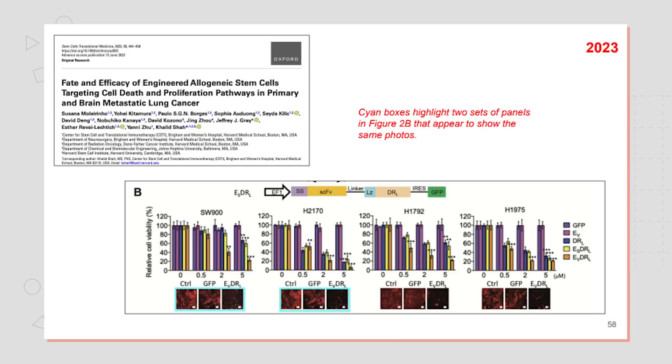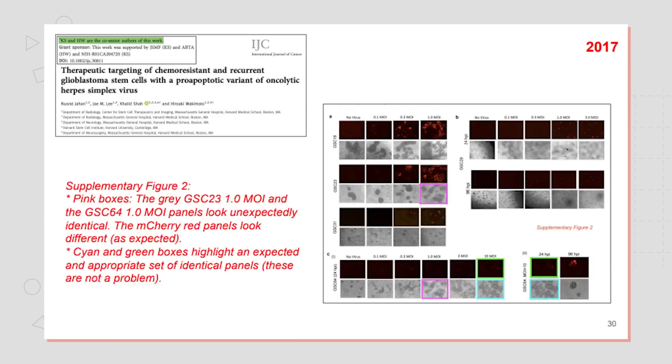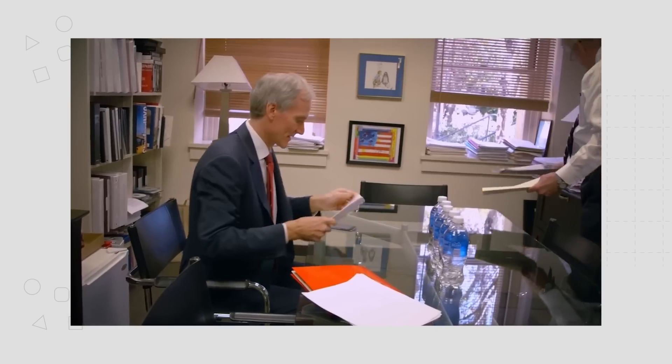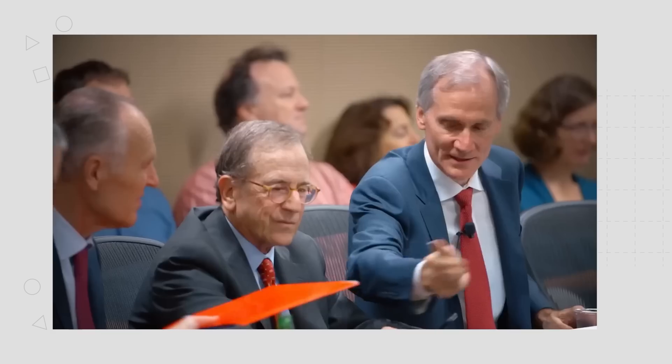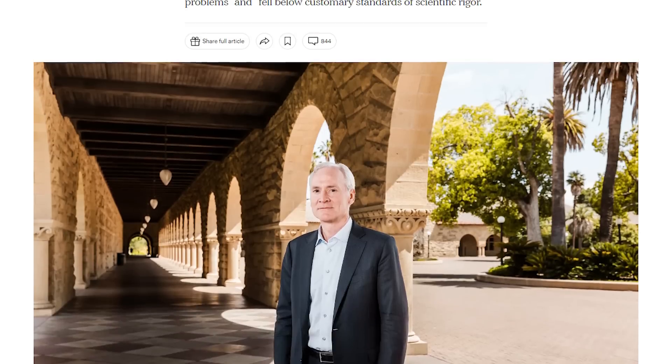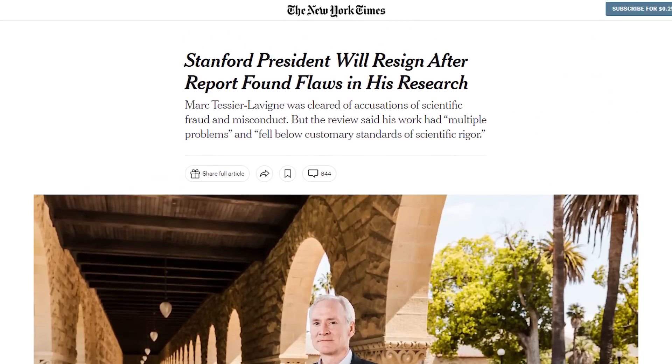Not all heroes wear capes, and in today's video I'm talking to someone who I regard as a hero for science. Her name is Elizabeth Bick and she is best known for finding evidence of image fraud in academic papers. She was the one who found evidence of image fraud in Mark Tessier-Levine's papers — he was the president of Stanford University — and off the back of these allegations he actually ended up stepping down from his position as president.